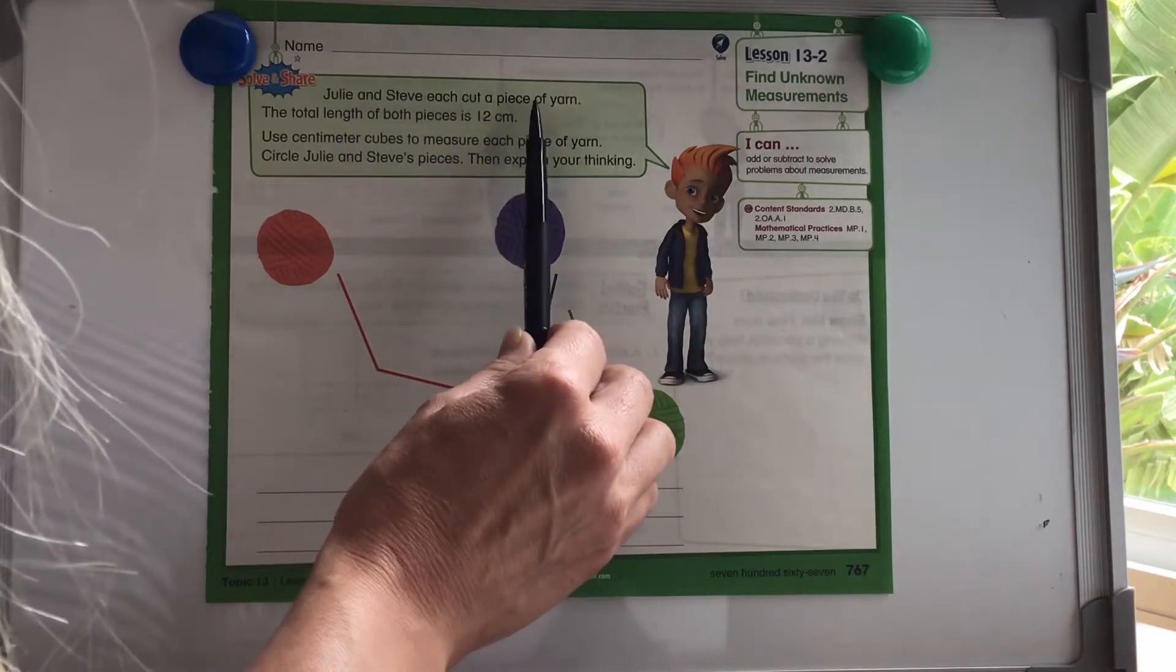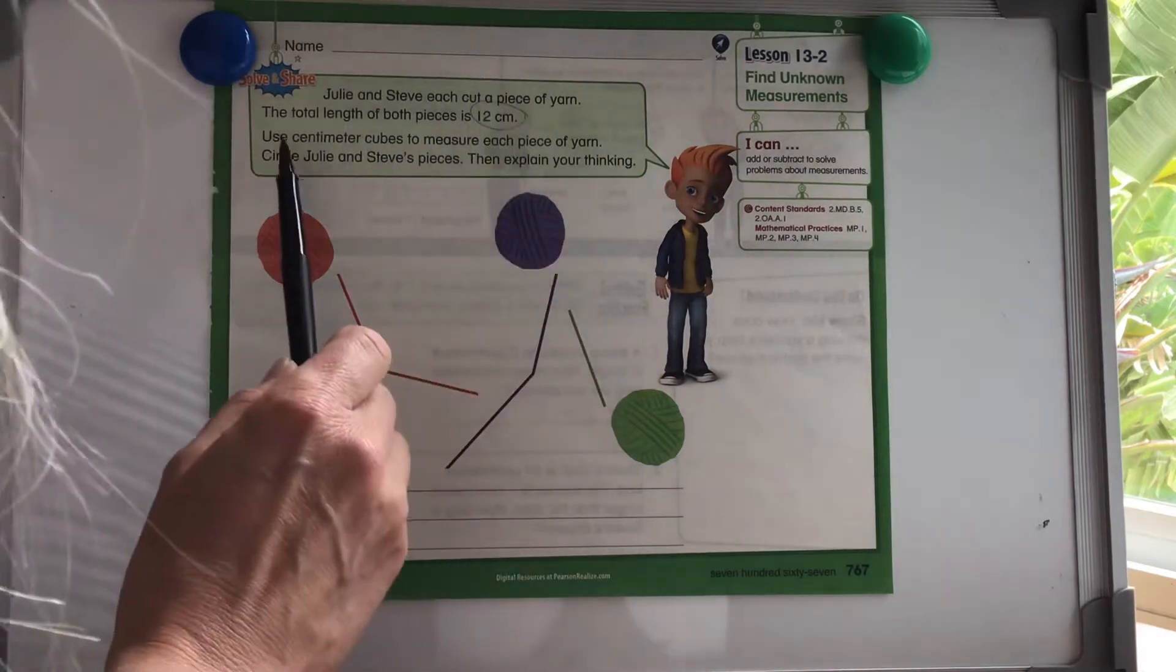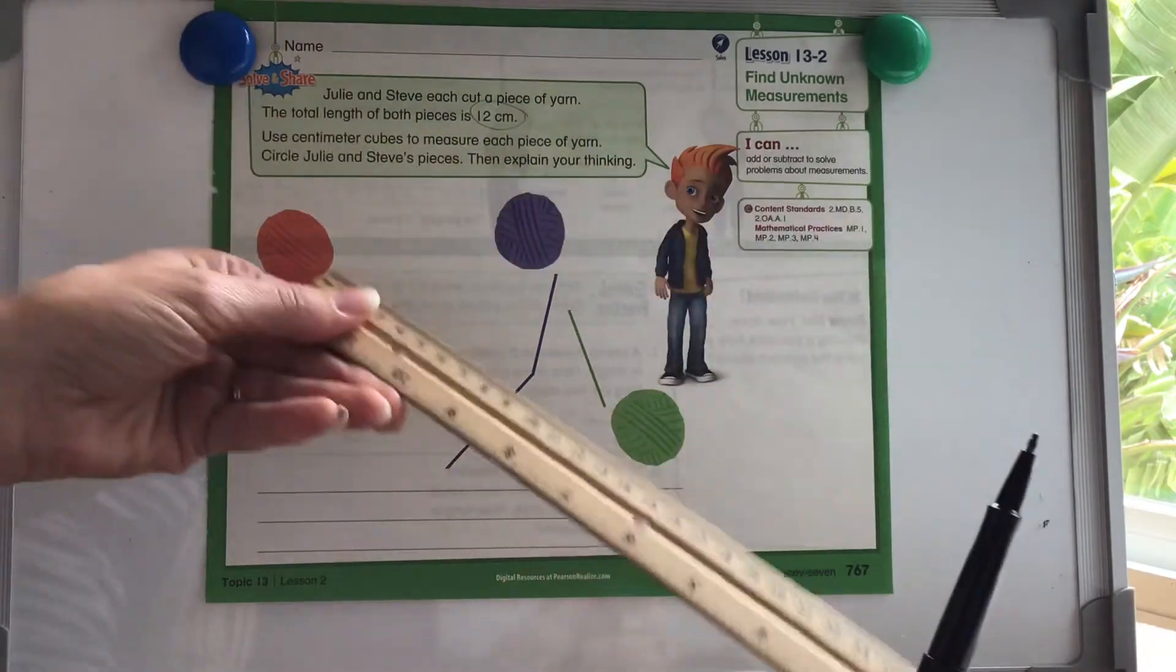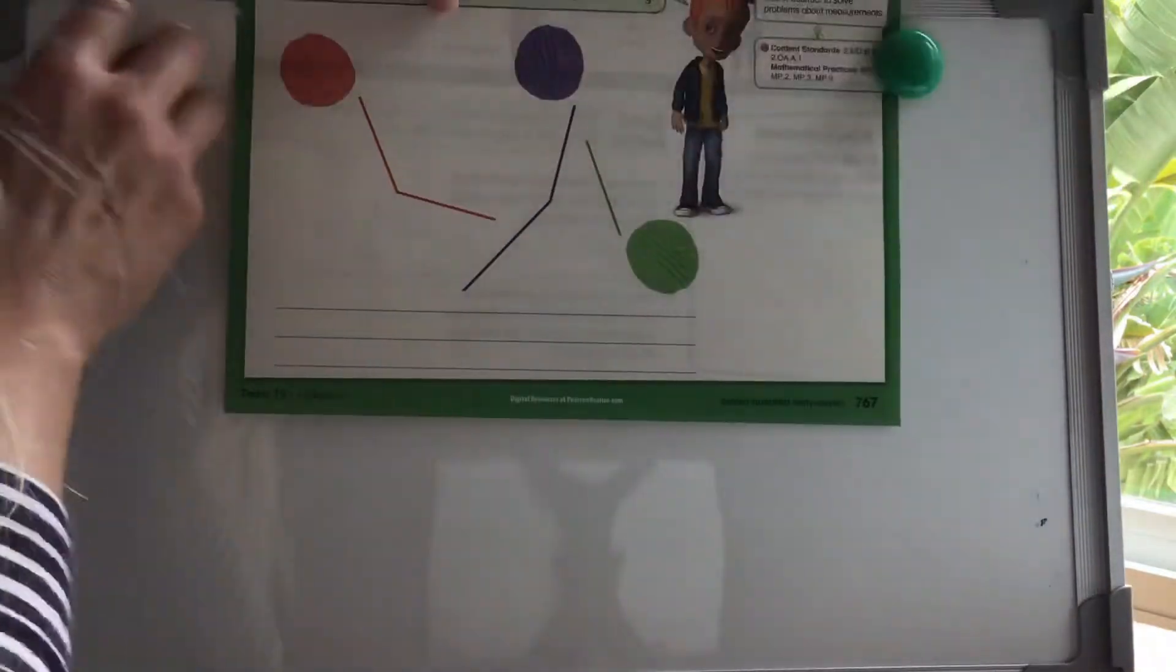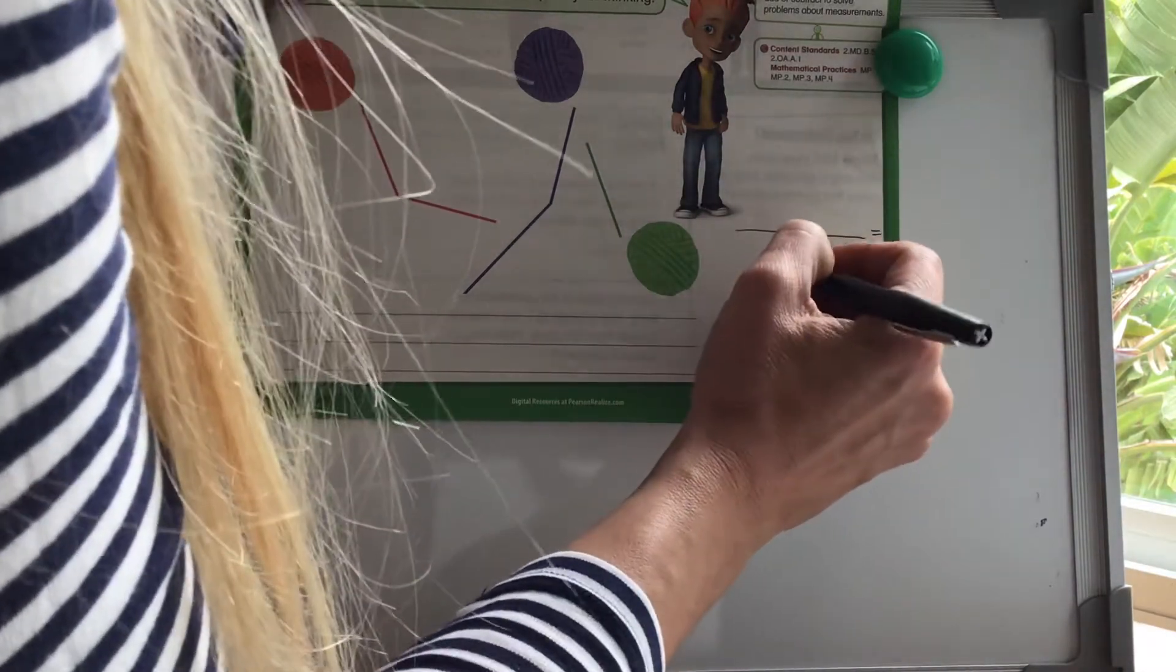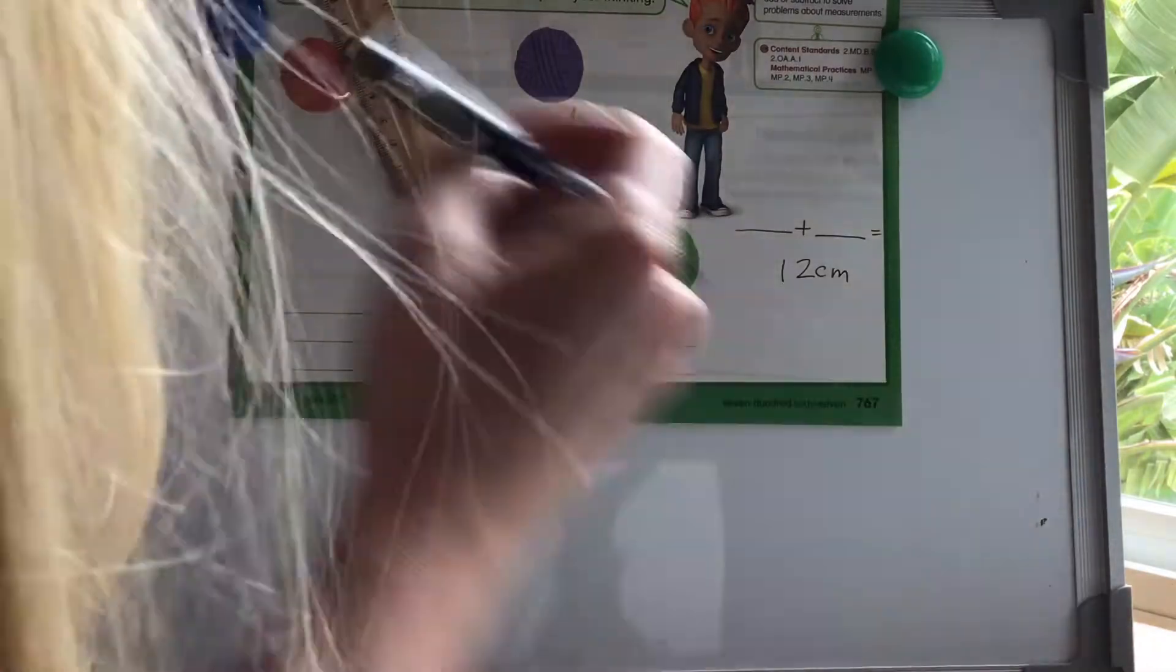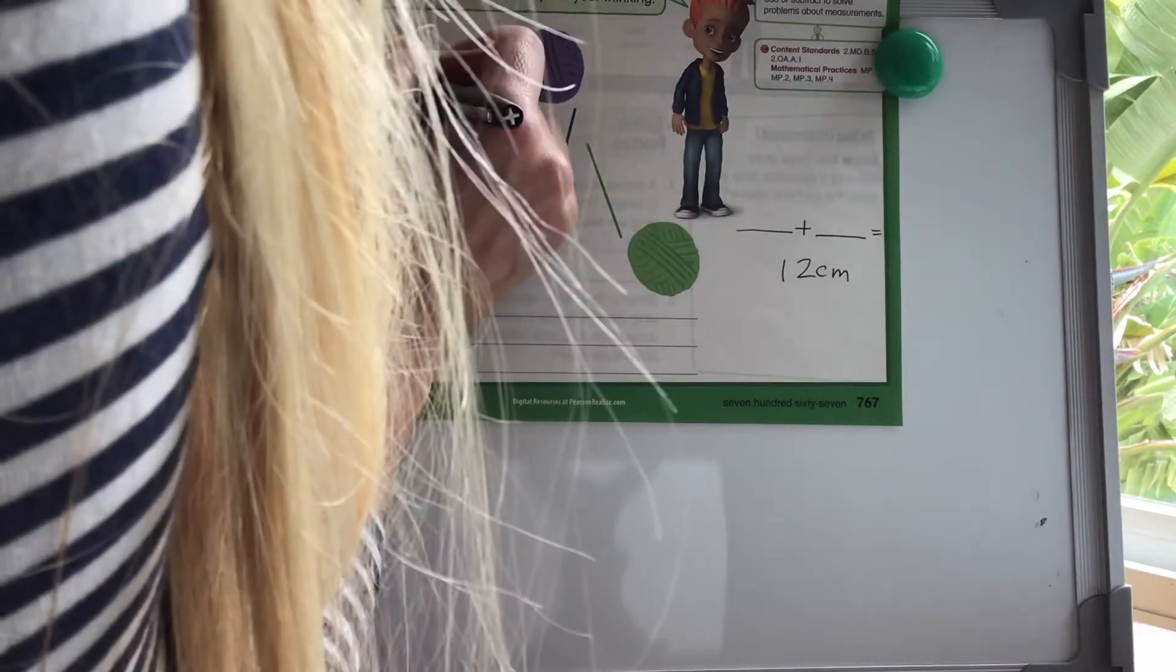Julie and Steve each cut a piece of yarn. The total length of both pieces is 12 centimeters. Use centimeter cubes to measure each piece of yarn. Circle Julie and Steve's pieces, then explain your thinking. So because at home we don't have our centimeter cubes, we're just going to use the actual measurement here on our ruler. So I'm going to move this up a little bit so it's a little bit easier for me to measure. So now we need to have two pieces that we put together that equal 12 centimeters. So we're going to measure both of these.